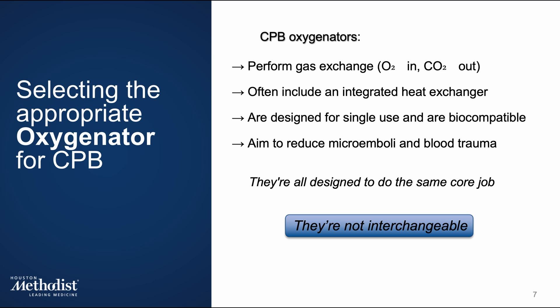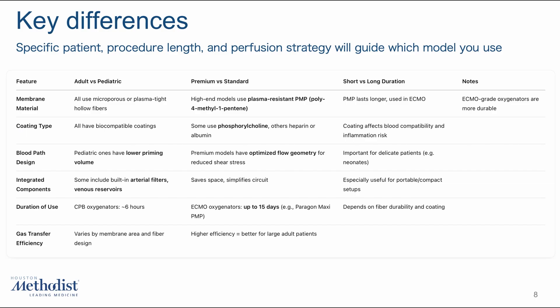Let's look at the key features that differentiate CPB oxygenators across the market. It's important to note that they are not interchangeable even if they are all designed to do the same core job. Starting with the membrane material: most CPB oxygenators use microporous hollow fiber membranes, which are effective for short-term procedures. However, some oxygenators, especially those designed for ECMO, use polymethylpentene (PMP) fibers, which can function safely for days instead of hours. The membrane material directly determines whether an oxygenator is suited for bypass or long-term extracorporeal support.